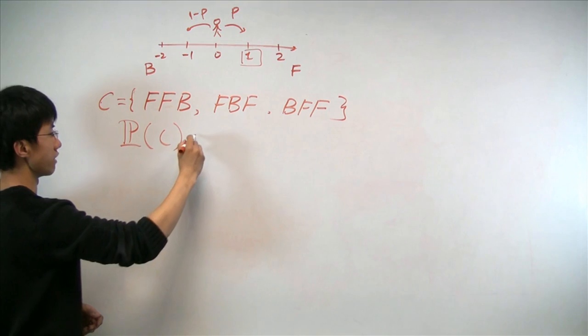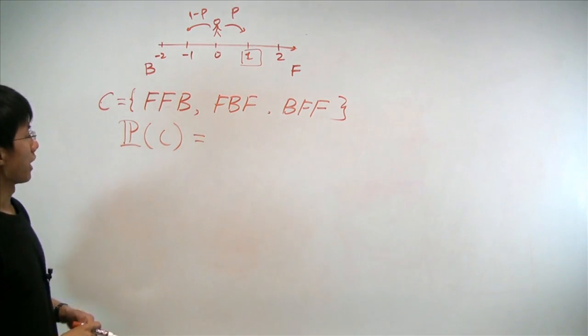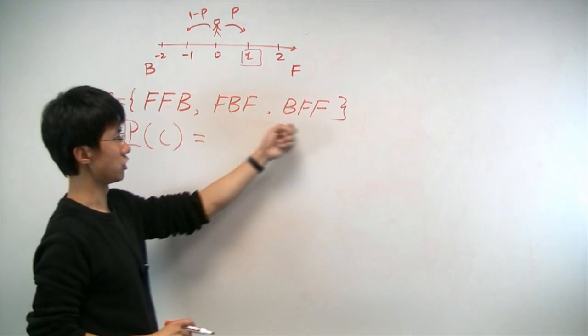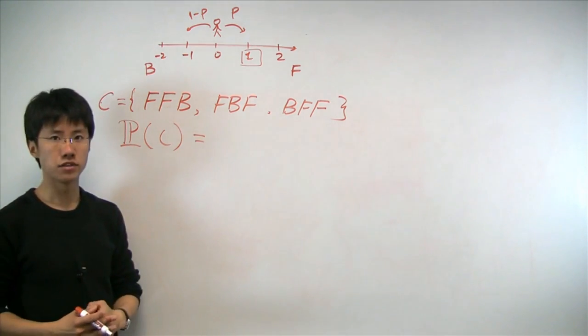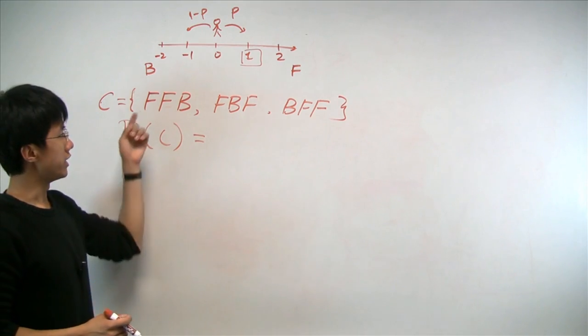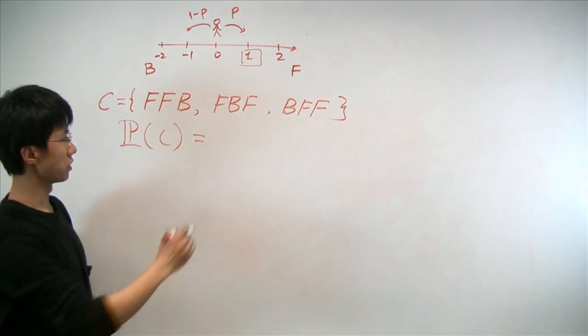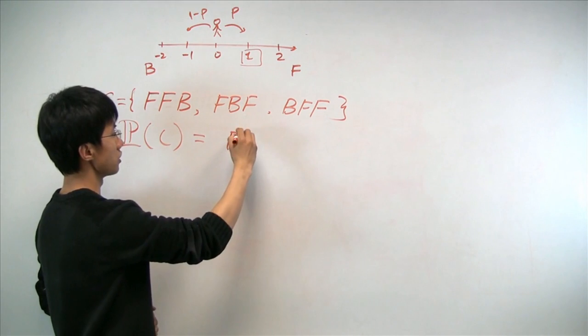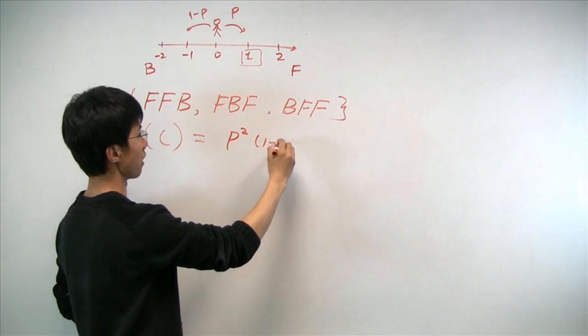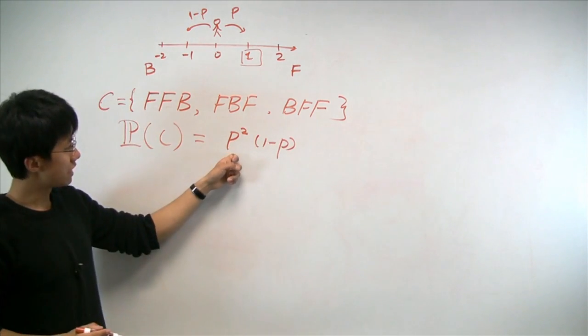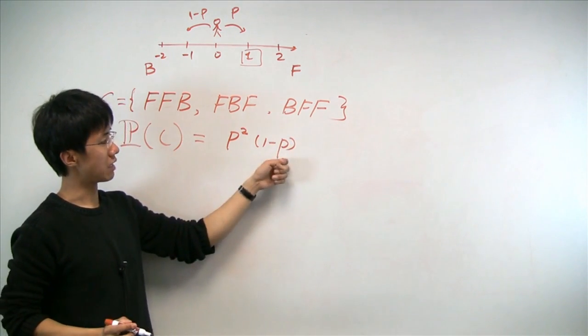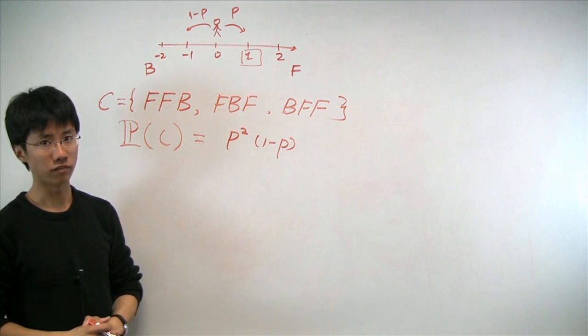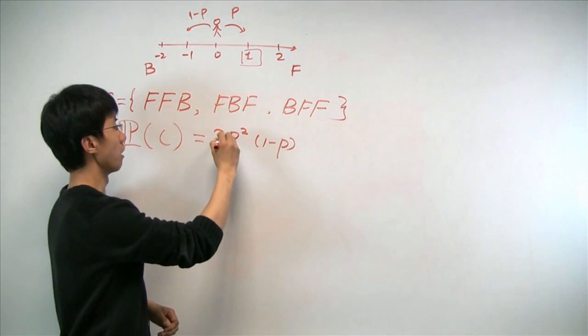The probability of event C, same as before, is simply the sum of the probability of each individual outcome. Now, based on the independence assumption that we used before, each outcome here has the same probability, which is equal to p squared times 1 minus p. The p squared comes from the fact that two forward steps are taken, and 1 minus p, the probability of that one backward step.